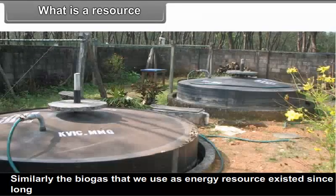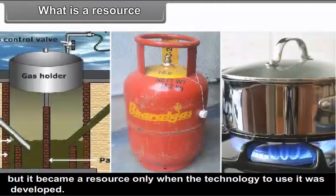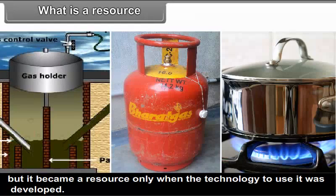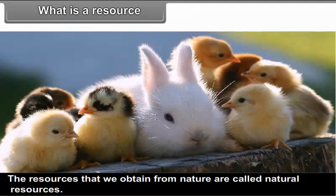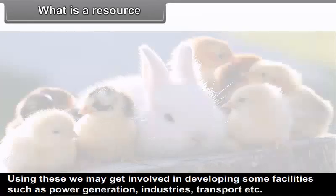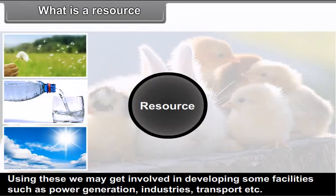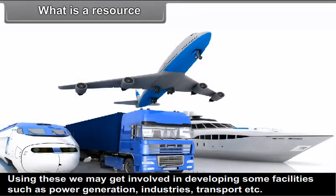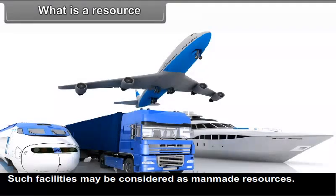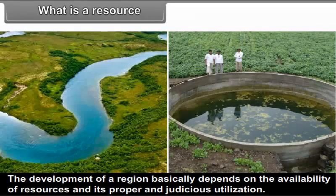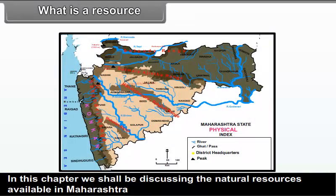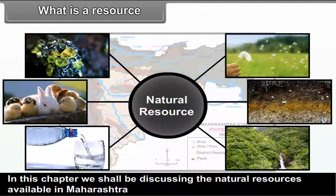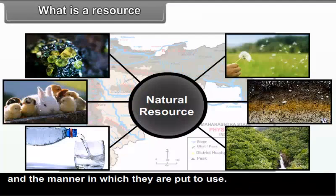Similarly, the biogas that we use as energy resource existed since long, but it became a resource only when the technology to use it was developed. The resources that we obtain from nature are called natural resources. Using these, we may get involved in developing some facilities such as power generation, industries, transport, etc. Such facilities may be considered as man-made resources. The development of a region basically depends on the availability of resources and its proper and judicious utilization. In this chapter, we shall be discussing the natural resources available in Maharashtra and the manner in which they are put to use.